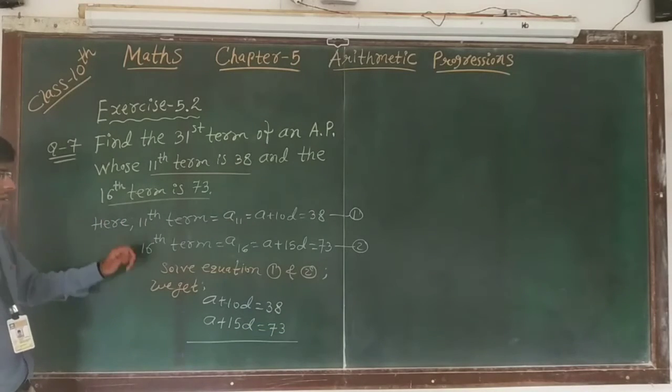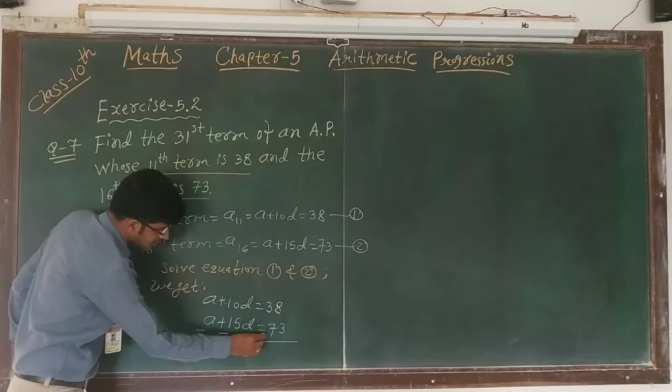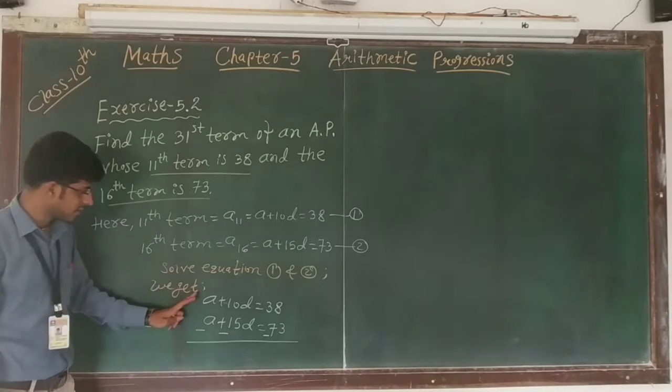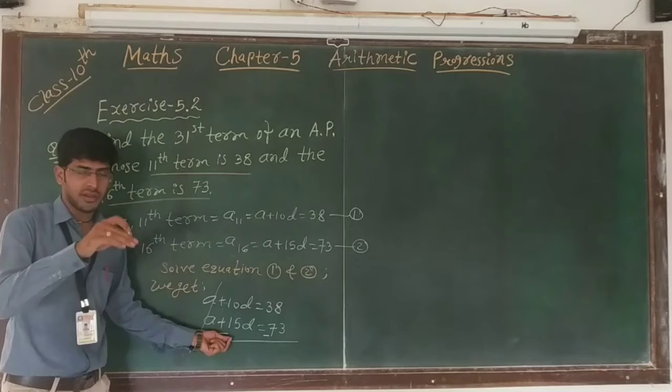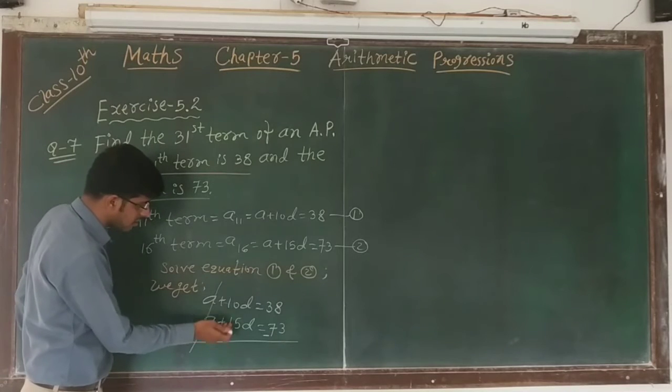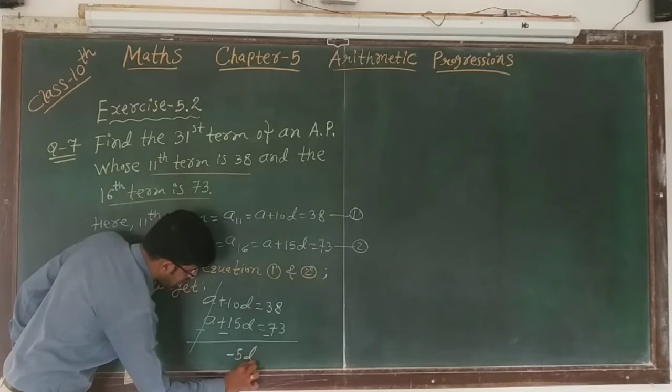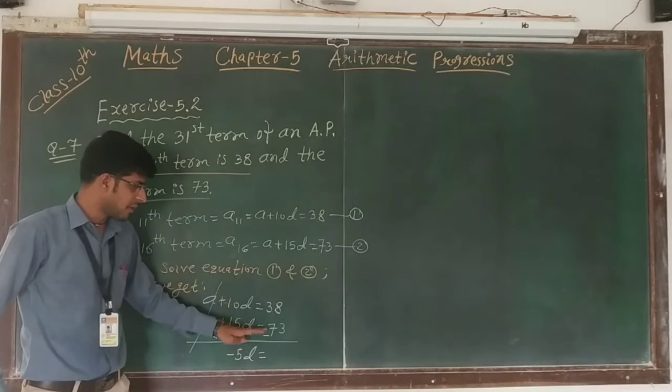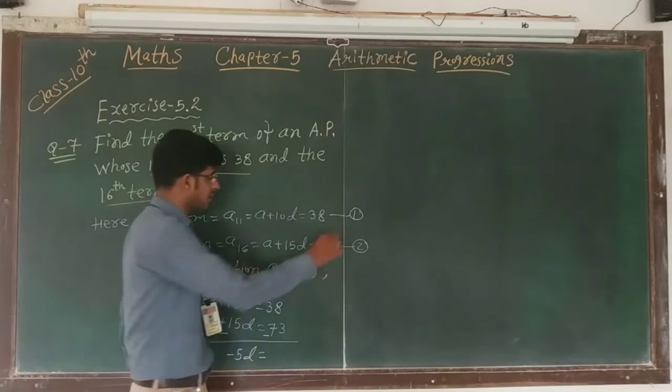Now plus and minus here. Here 10d minus 15d gives negative number because we will subtract bigger number from smaller number, it gives minus 5d. Now here 38 minus 73 is not possible, so we will subtract 73 minus 38.